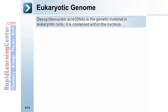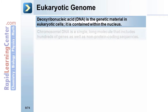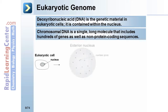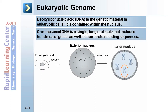Eukaryotic genome: deoxyribonucleic acid (DNA) is the genetic material in eukaryotic cells and is contained within the nucleus. Chromosomal DNA is a single long molecule that includes hundreds of genes as well as non-protein-coding sequences.